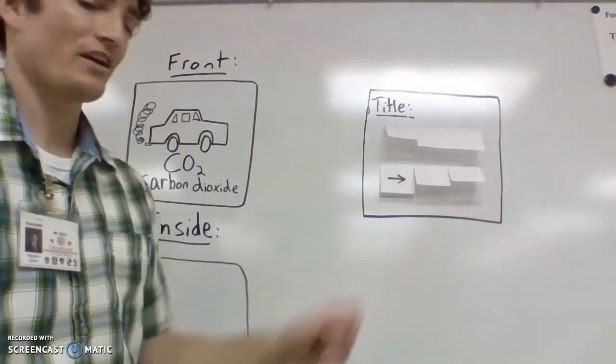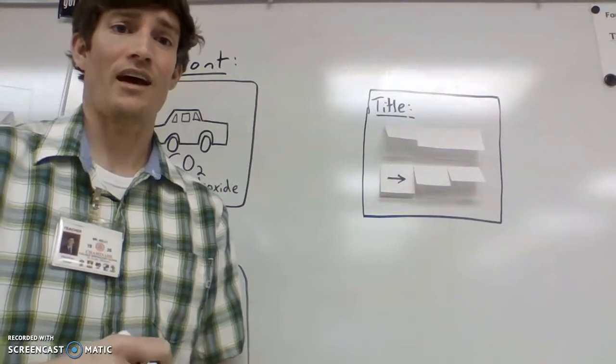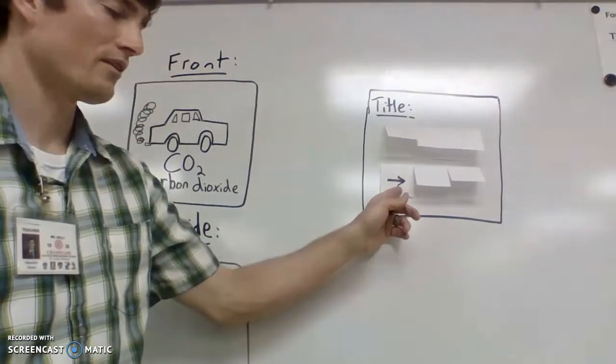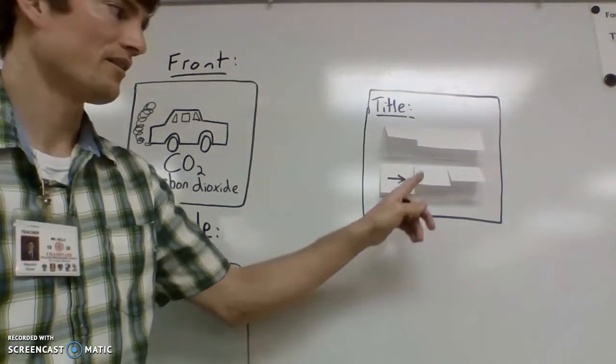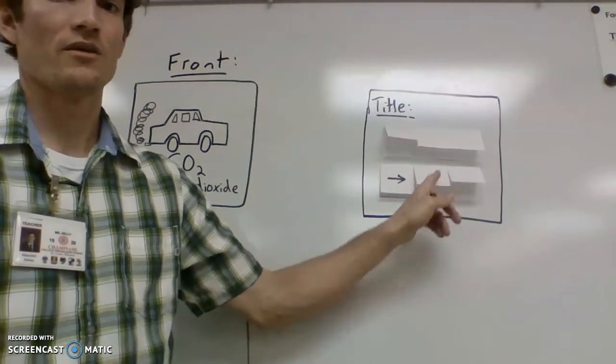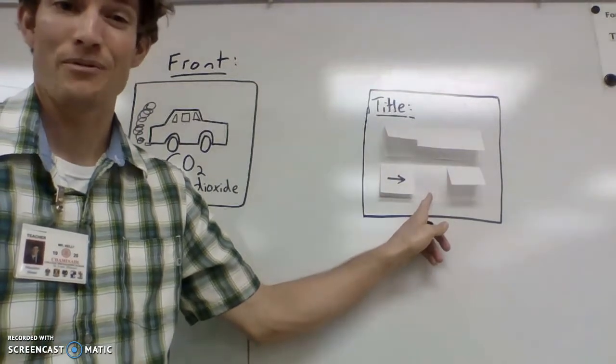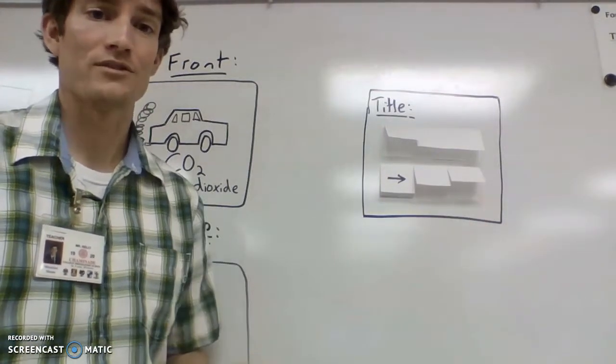We have to represent this reaction as having an arrow, not an equal sign. So that's what is going to go in the first box on this second row, and then you'll do your other two products, which are glucose or some other type of sugar, and then also oxygen.